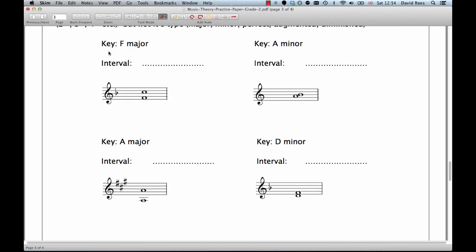In our first example, which it tells us is in the key of F major, which might be important because there might be a key signature which will change the notes that we're looking at. We've got these two notes here, an F and a C. So how many notes apart are F and C?